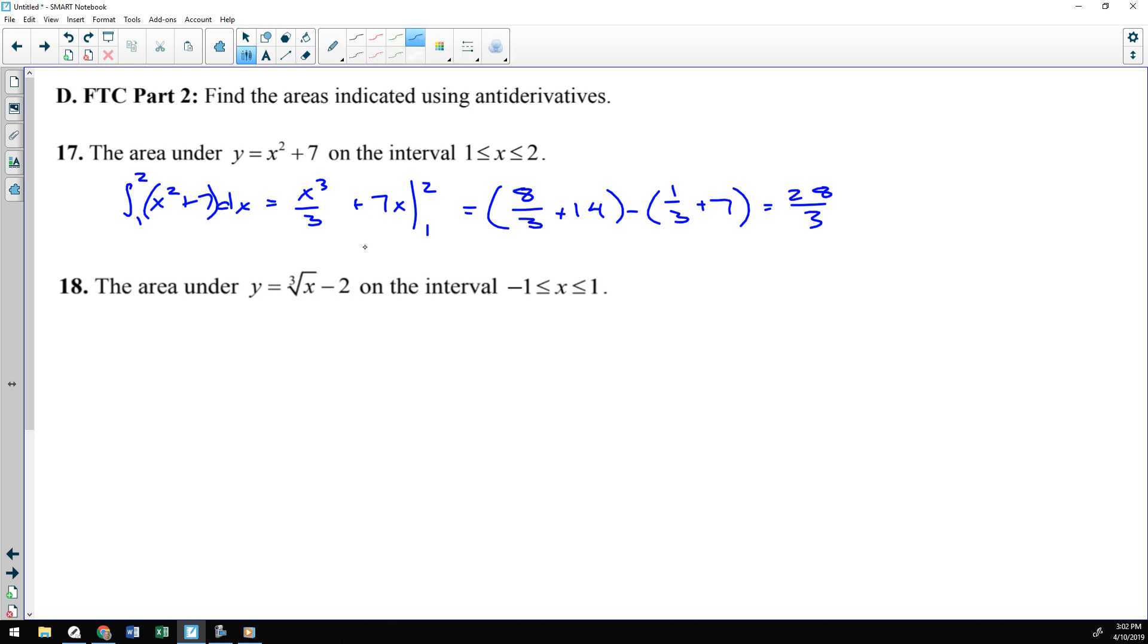Number 18, same thing. We're going to do the antiderivative from negative one to one of this function. I'm changing the cube root of x to x to the one-third. Then we'll do the antiderivative: one-third plus one is four-thirds. When you divide by that new exponent, that's the same as multiplying by three-fourths. The antiderivative of two would be two x, and then we'll plug in negative one and one.